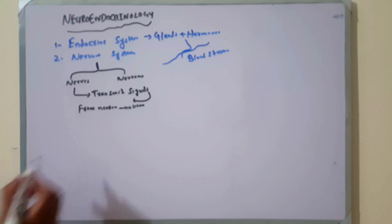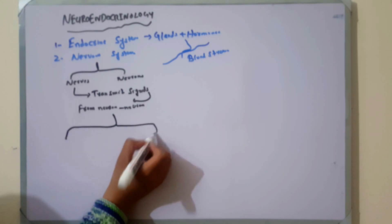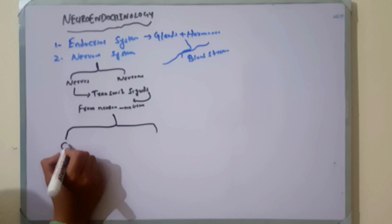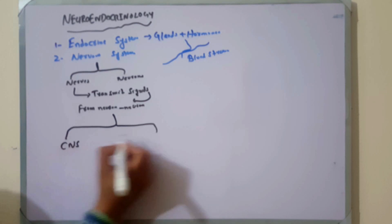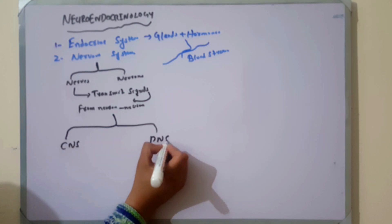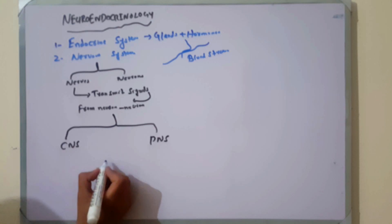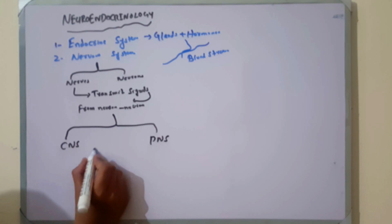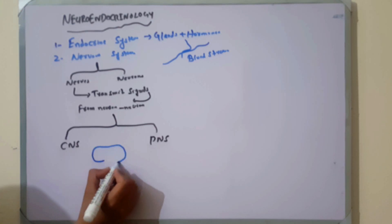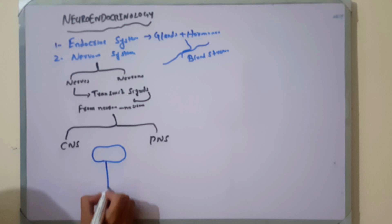The Nervous system can be divided into two components: one is called the Central Nervous System and the second is called the Peripheral Nervous System. The Central Nervous System is composed of the brain and spinal cord.